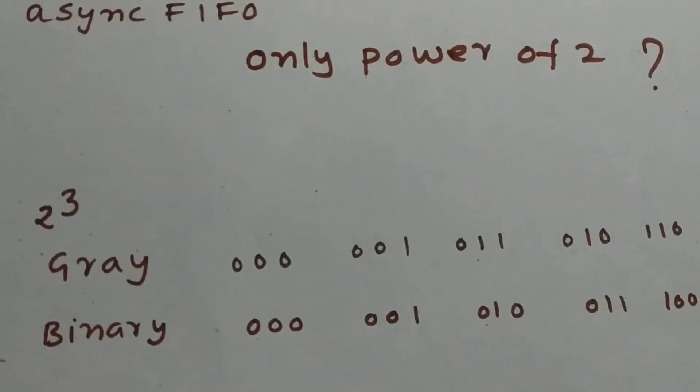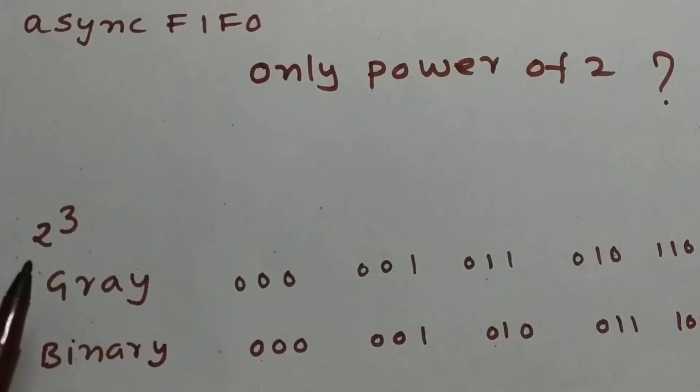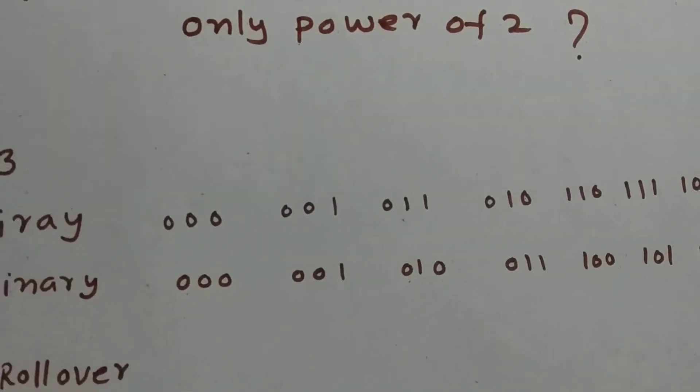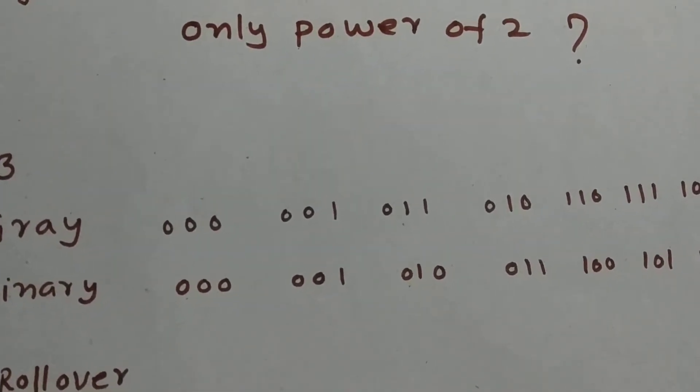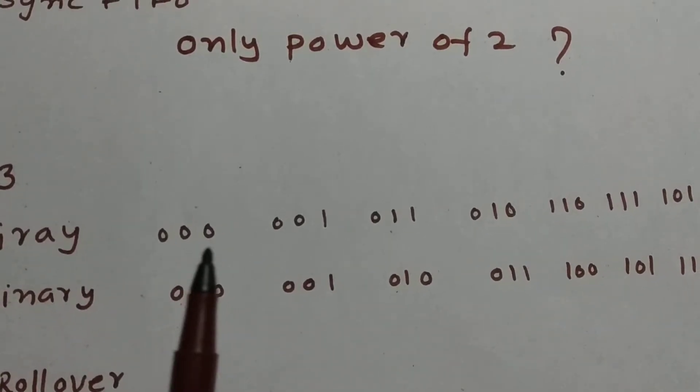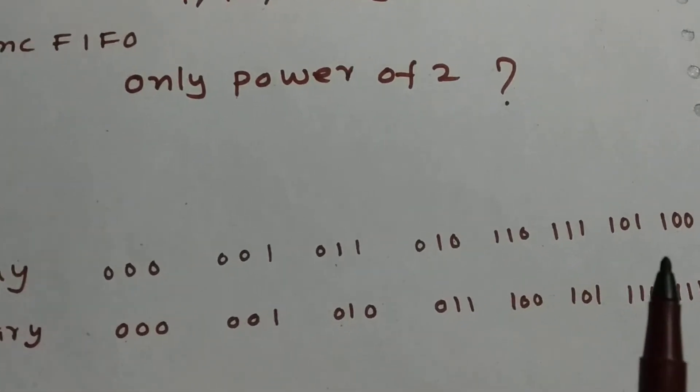Let us consider a depth of 2 power 3, that means the depth is 8. We know that gray conversion will be happening from write pointer to read pointer. So let us consider gray 0, 1, 2, 3, 4, 5, 6, 7.